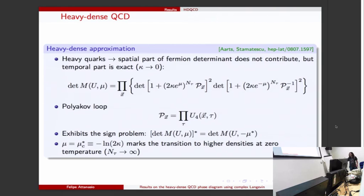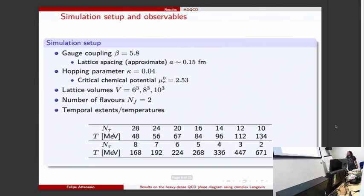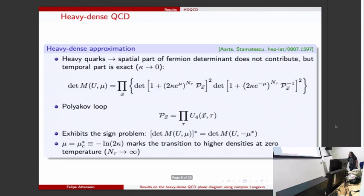This is the setup we used. We used beta equals 5.8, slightly larger than the previous speaker, which gives us an approximate spacing of 0.15 fermi. The hopping parameter was 0.04 so the quarks were indeed very heavy, which gives us a critical chemical potential of this value. We have three different volumes: 6 cubed, 8 cubed, and 10 cubed with two flavors, and many different temperatures going from about 50 MeV to almost 700 MeV.